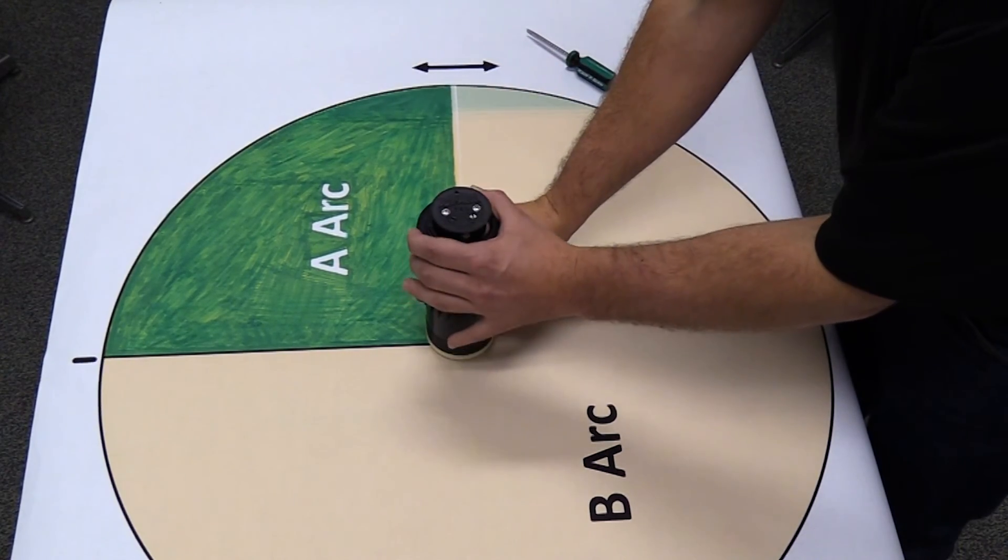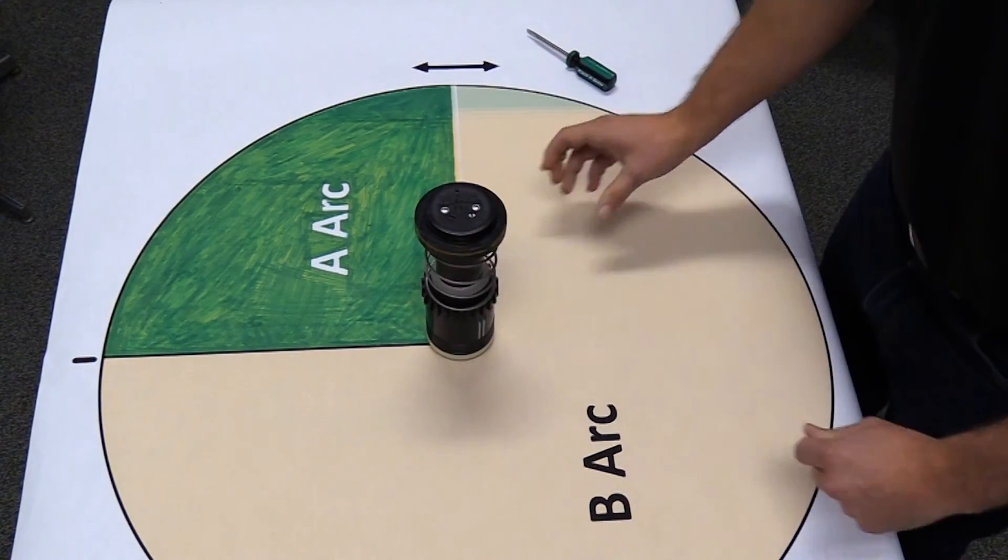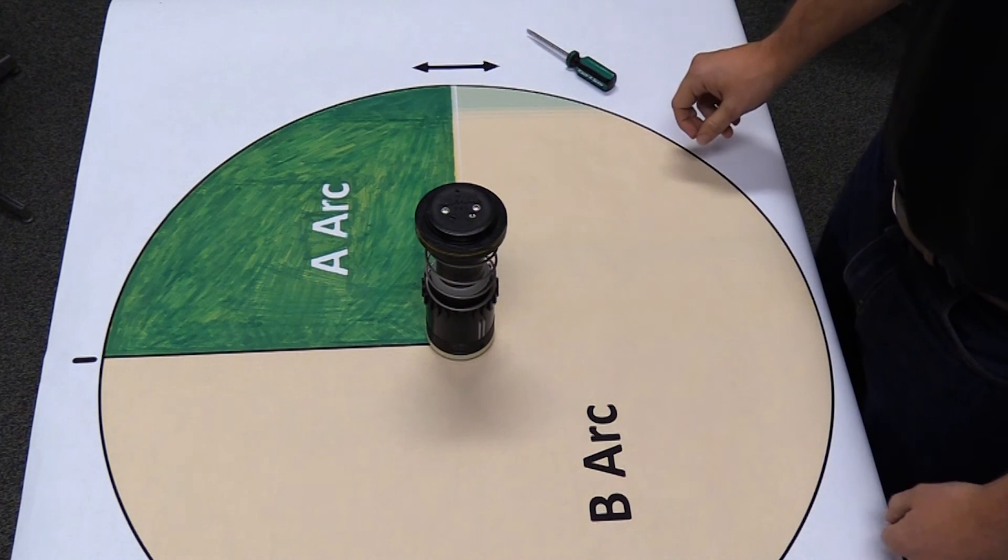And that's how you set the Rain Bird 751 rotor to A arc or B arc. Thanks for watching.